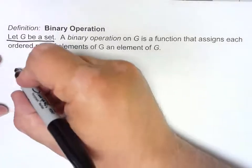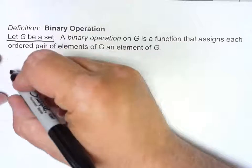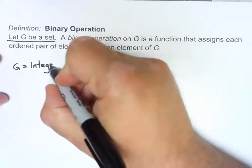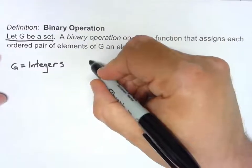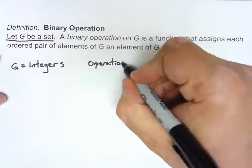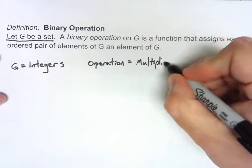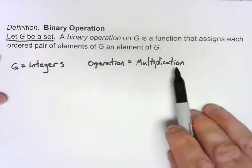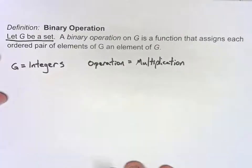So a simple little example would be, let's say our set G equals the integers. And let's take as our operation standard multiplication. Certainly if we multiply any two integers, we get another integer. So this is a good example of binary operation.